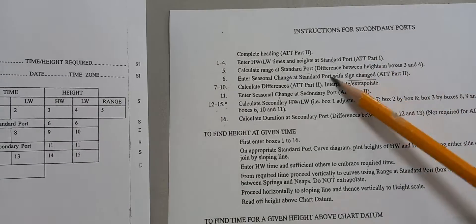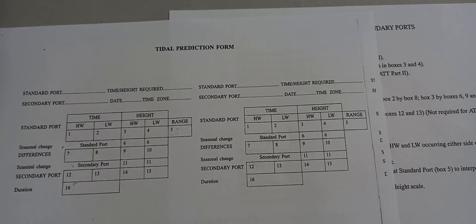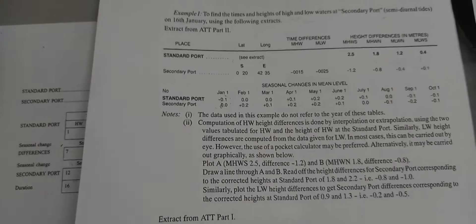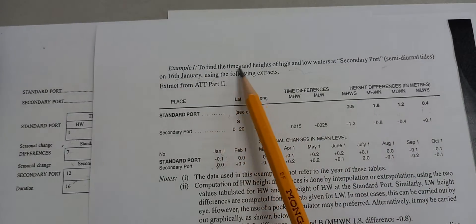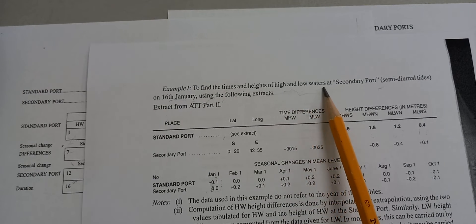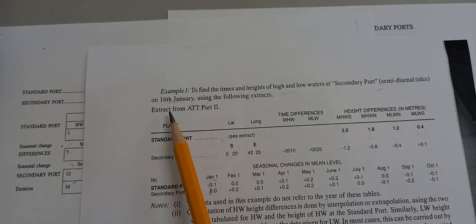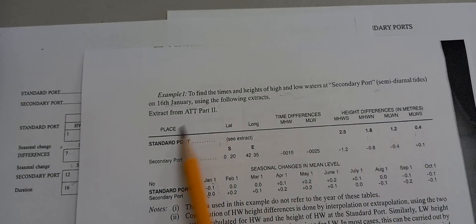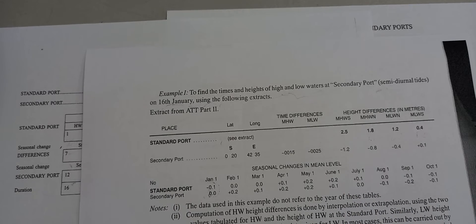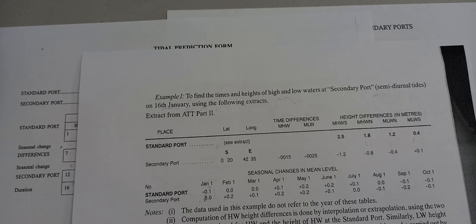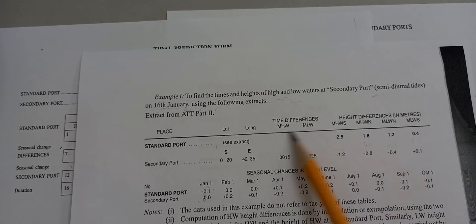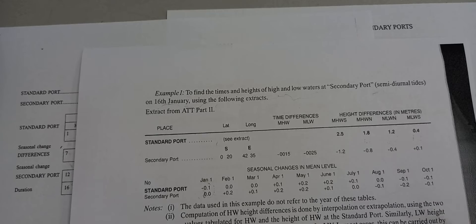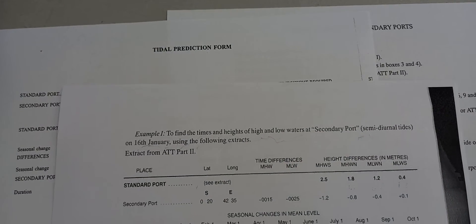To understand this further, here are the instructions and the tidal prediction form. I'm going to give you a worked example. We're going to find the times and heights of high water and low water for a secondary port on the 16th of January, using the following extract from the Admiralty tide tables. The extract information is already provided here, so all you need to do is understand where and what to put in the boxes of the tidal prediction form.